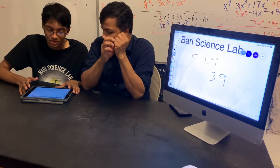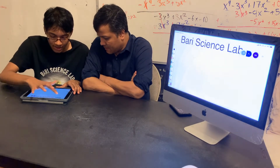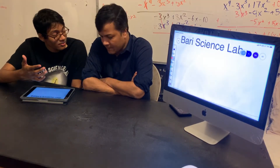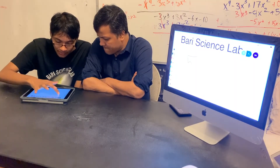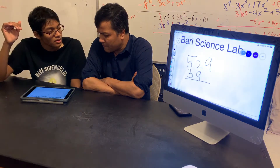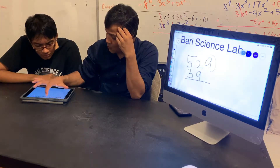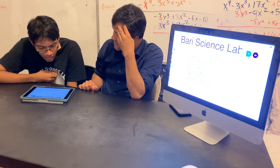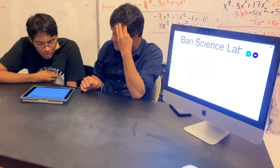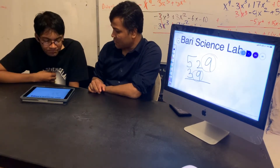I need the total. So 529 and 39 — those are the numbers. I have to stack them. Let me put 529 and 39. That's wrong because this nine is at the ones place. This nine is at the tens place. This is ones, this is tens, this is hundreds. So you should align them according to their place value.